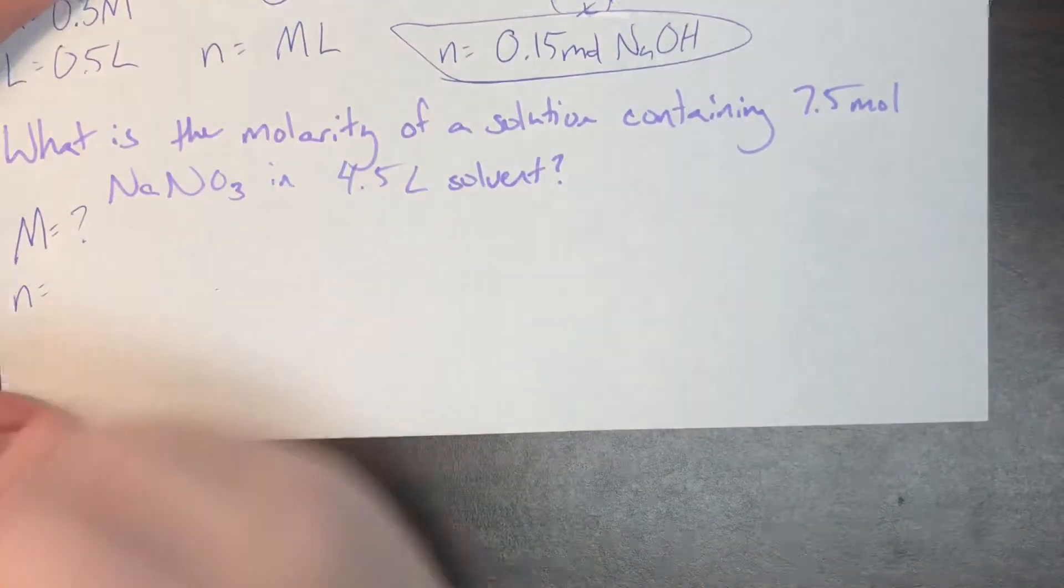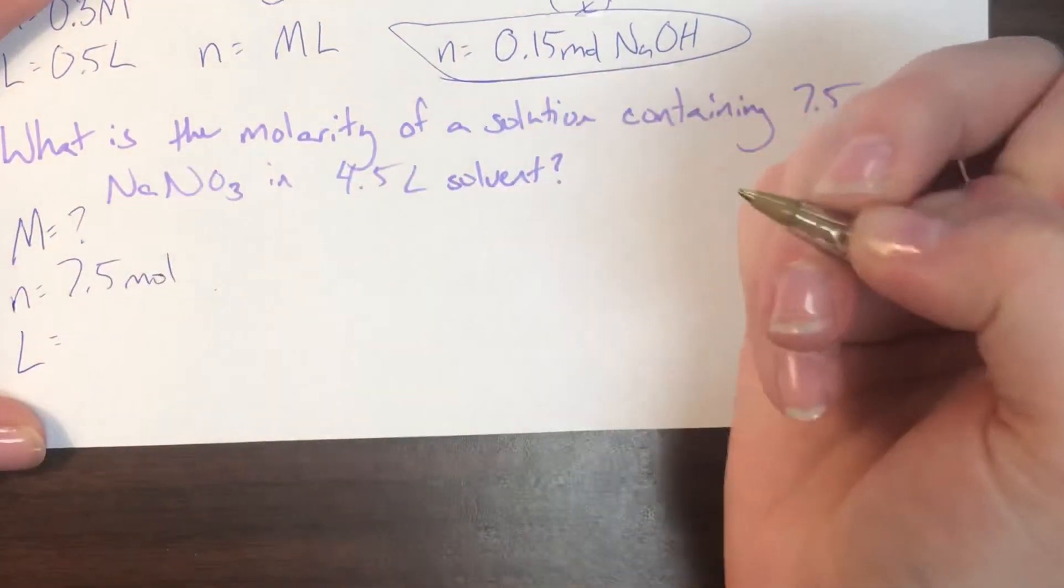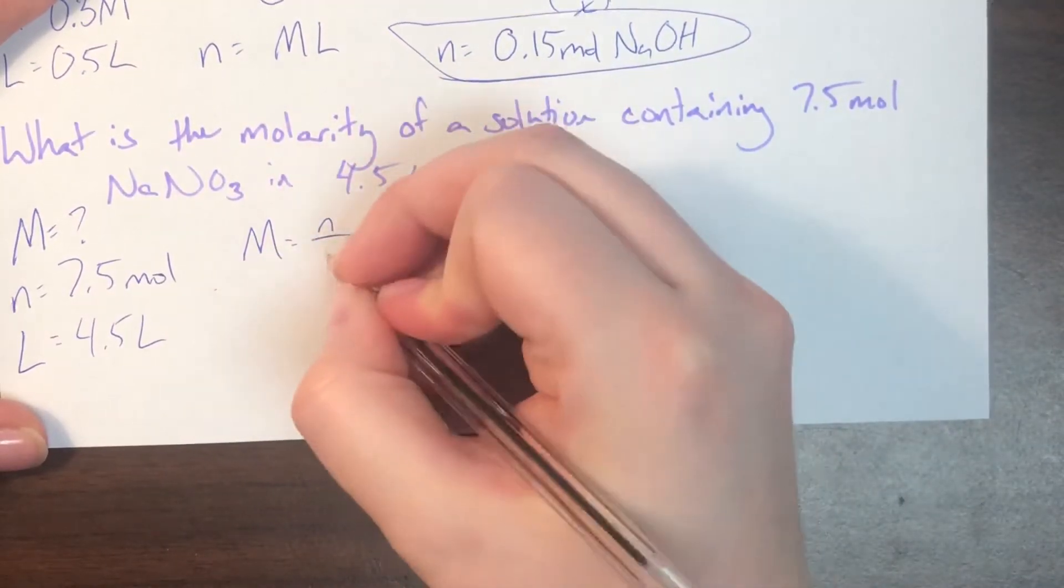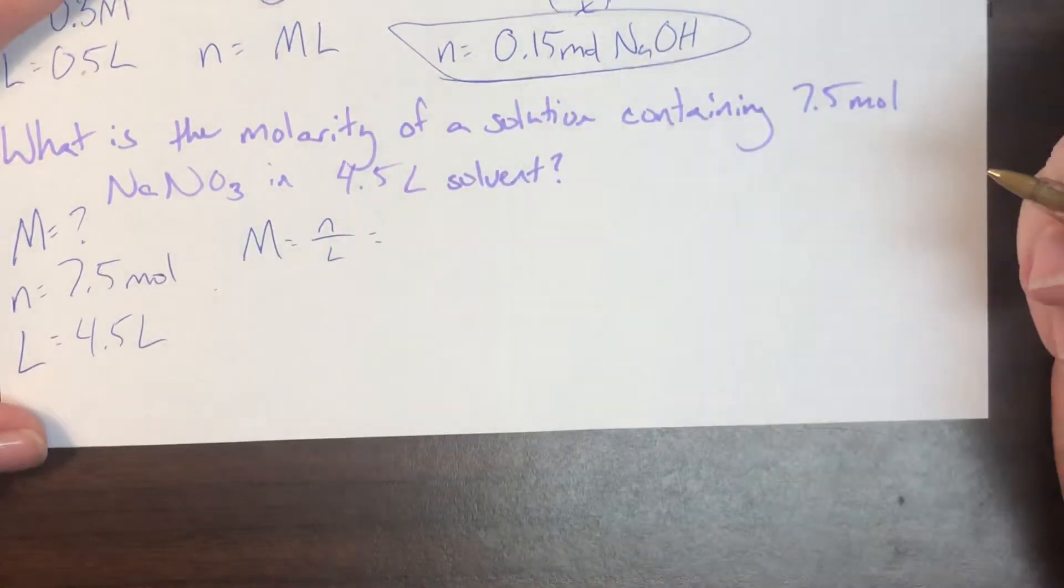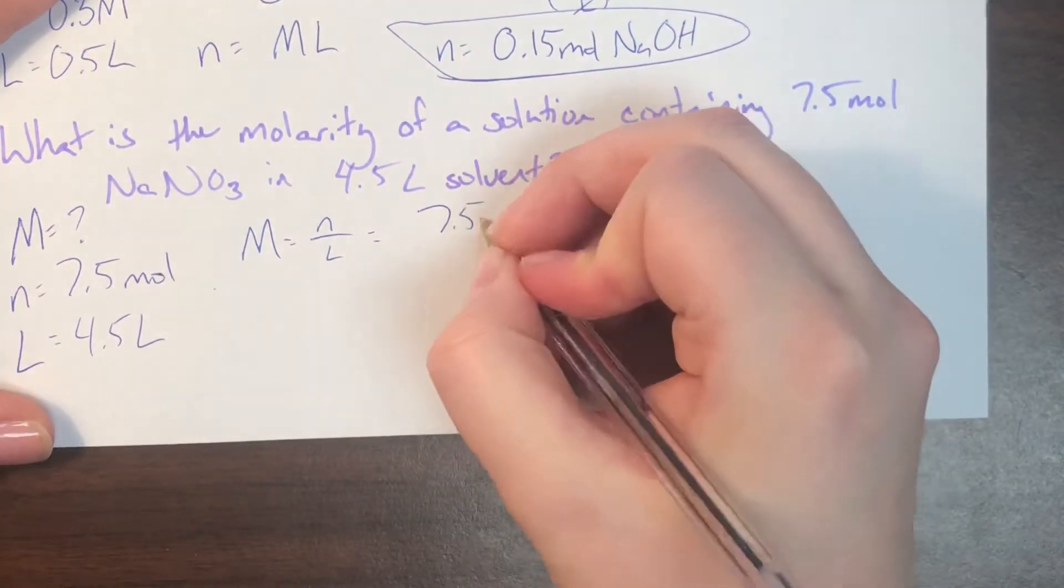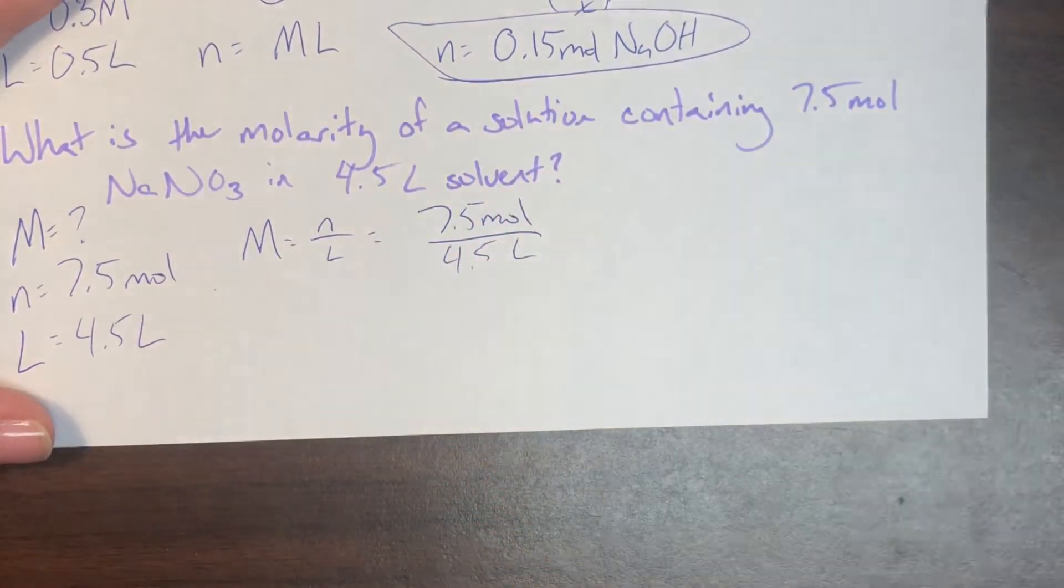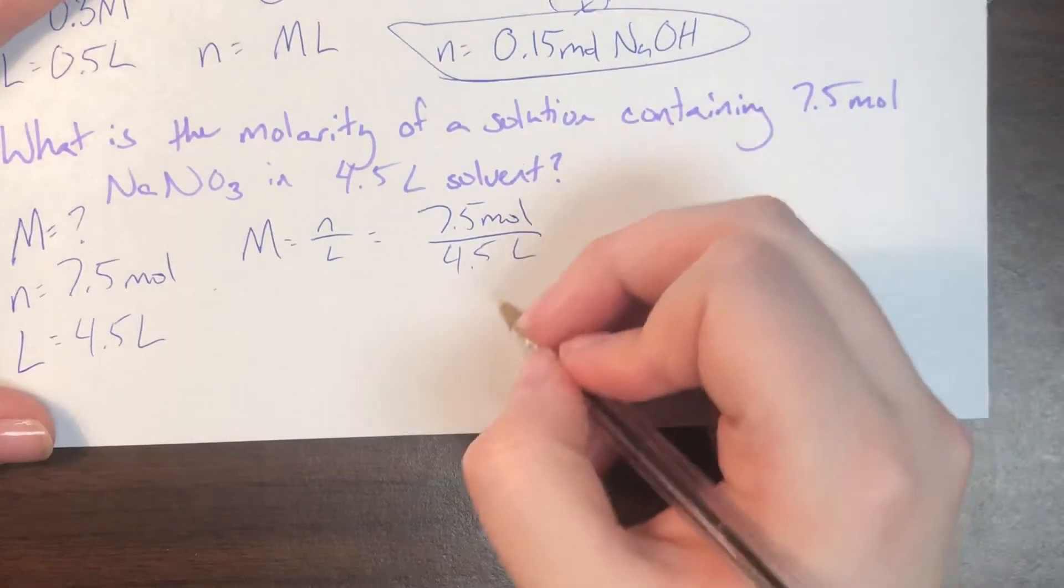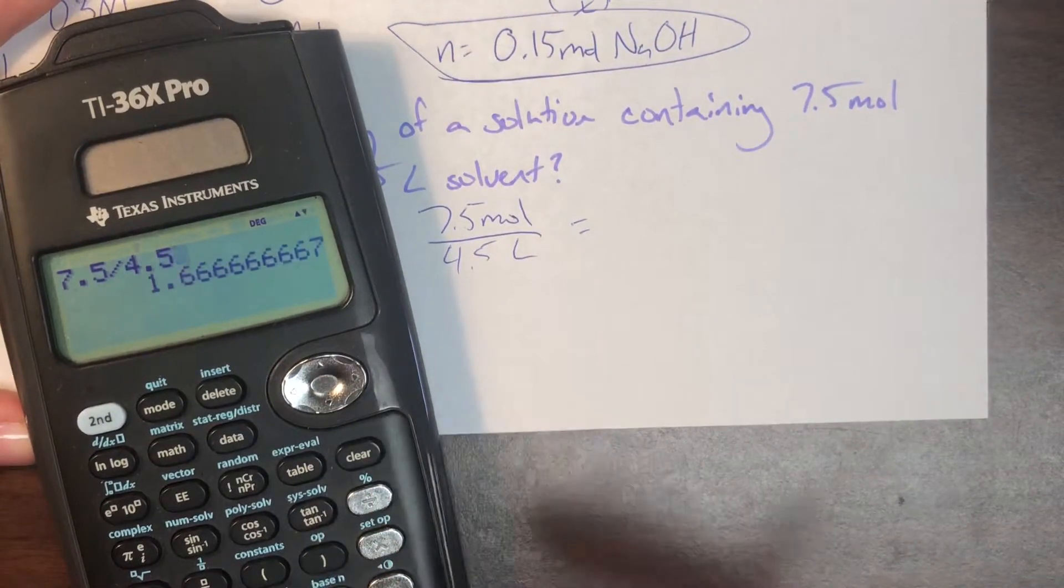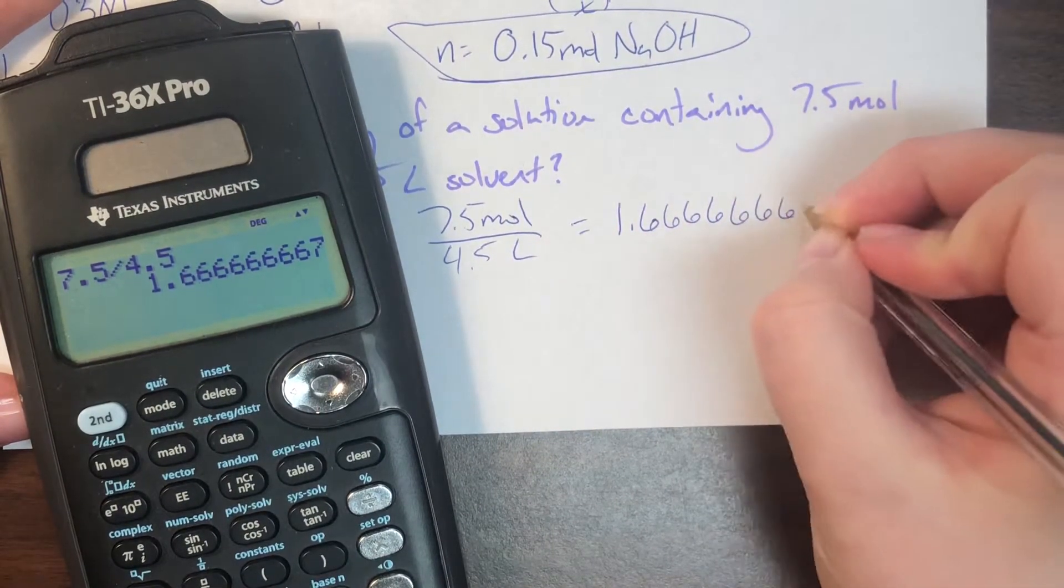But it contains 7.5 moles of sodium nitrate, so I know that my N, my sodium nitrate, is going to be 7.5 moles. And 4.5 liters of solvent, so I know that my liters of solvent is going to be equal to 4.5. Initial equation is already set up for me. So my moles of solute divided by liters of solvent, I have my moles here. So 7.5 moles divided by my liters of solvent is 4.5 liters. This will leave me with a unit of moles per liter, which is what capital M secretly is.